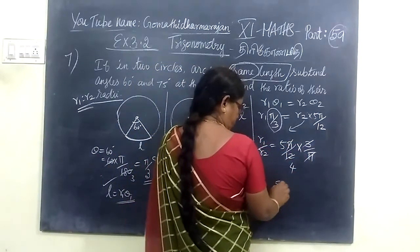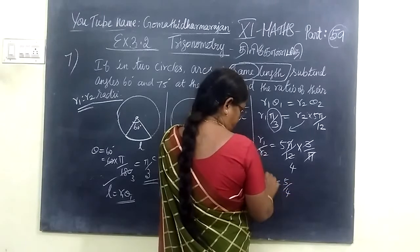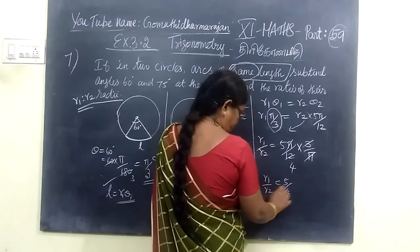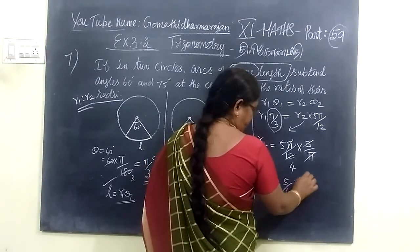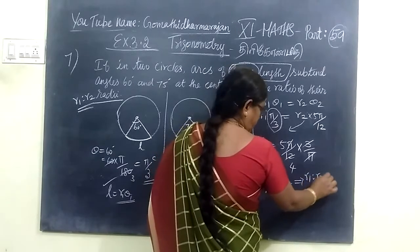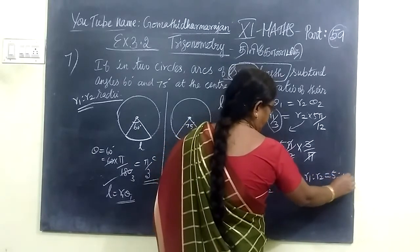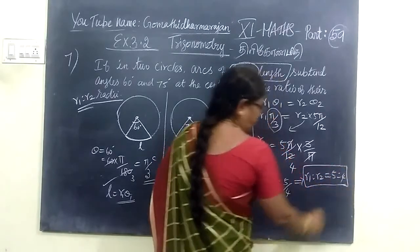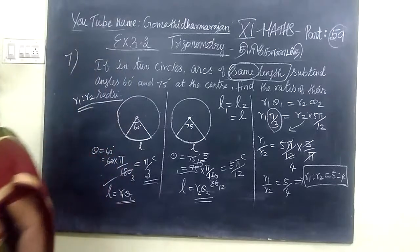Cancel π, 4 times 3 equals 12, giving 4 by 5. So r1 by r2, which implies r1 is to r2 equals 5 is to 4, which is the answer for that.